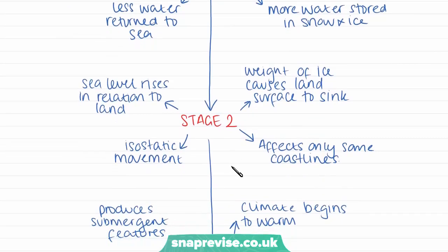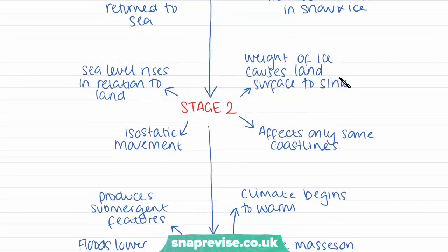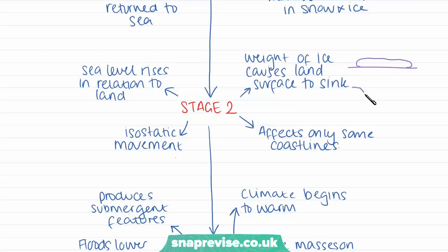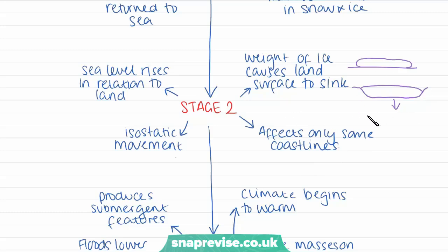In stage two, the weight of the ice on the land causes the land surface to sink — this is where we get isostatic movement. If we have a piece of land with a glacier sitting on top, as the glacier increases in size the land will start to sink under its weight. The land is therefore subsiding and moving downwards, which means sea level is rising in relation to the land — if the land is lower, the sea will come up higher on it. This only affects some coastlines around the world, but it is an example of isostatic sea level change.